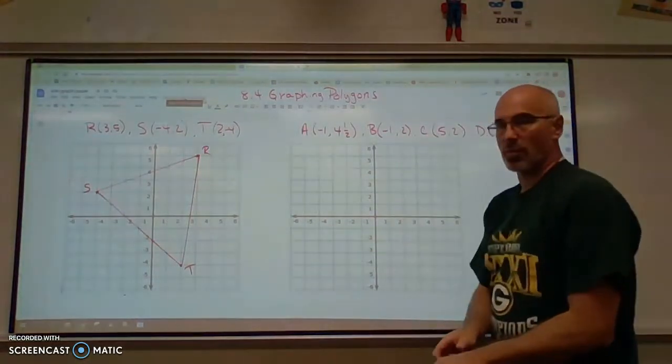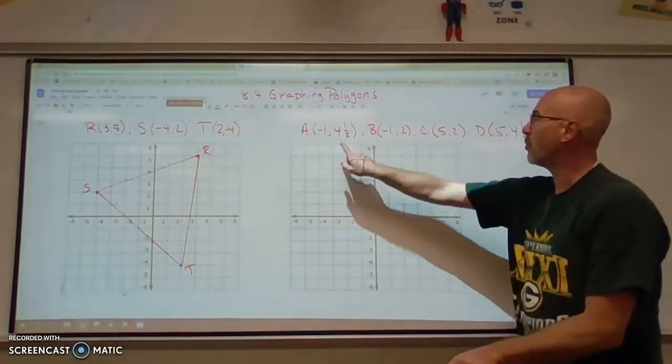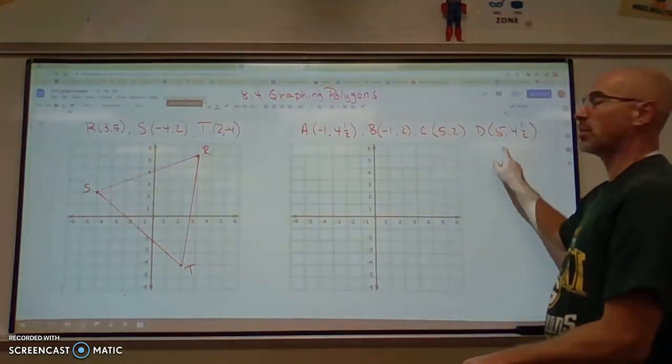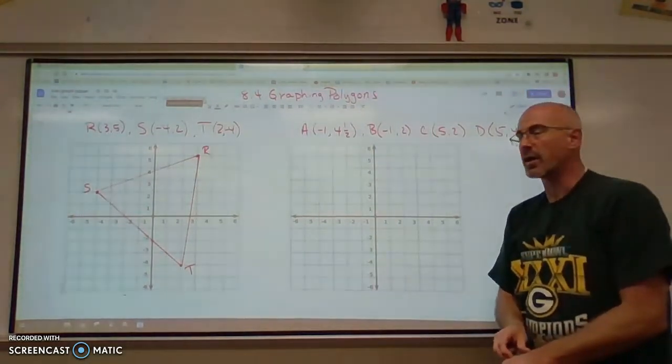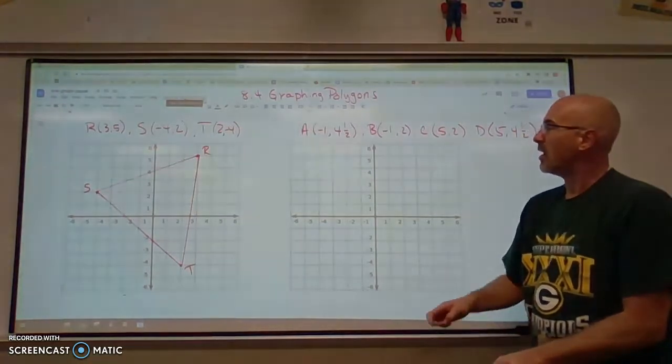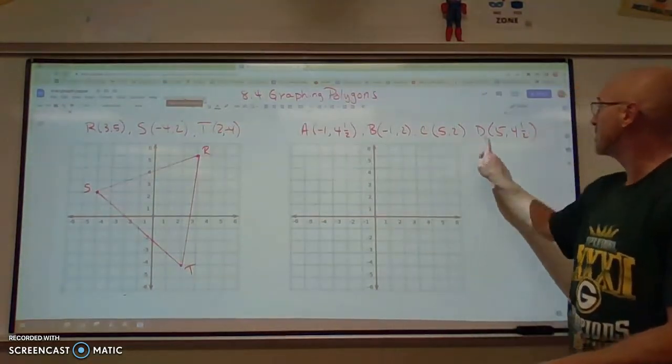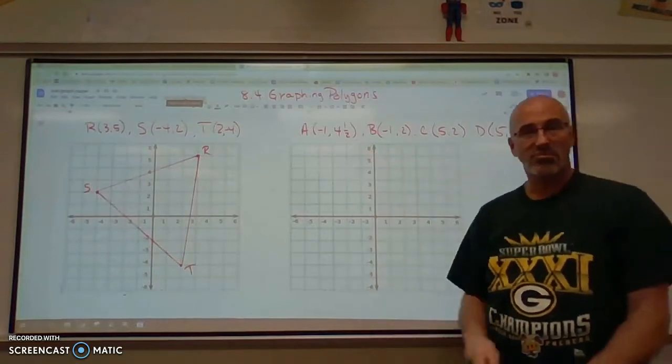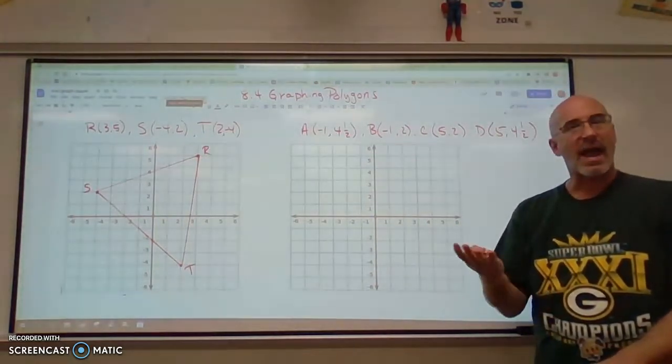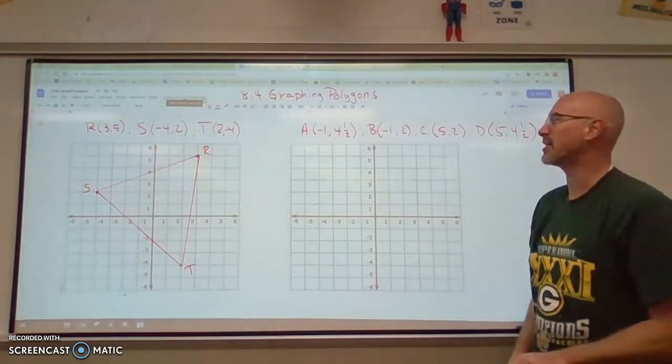Now let's move over to this example. We have four points to plot, and we're going to see which kind of polygon we get. Also notice that in our coordinates we have some fractions. I don't want you to be afraid of those. A half is just a half. We can do this.